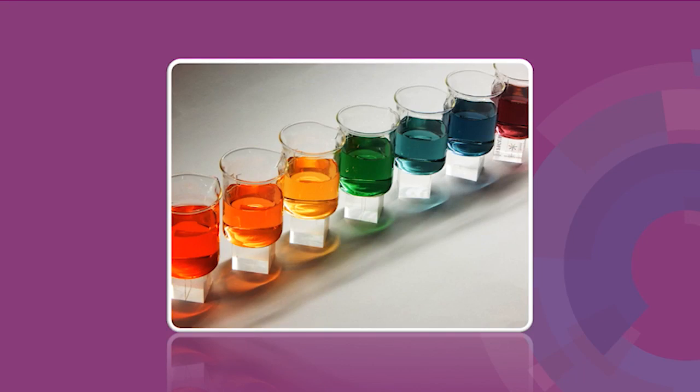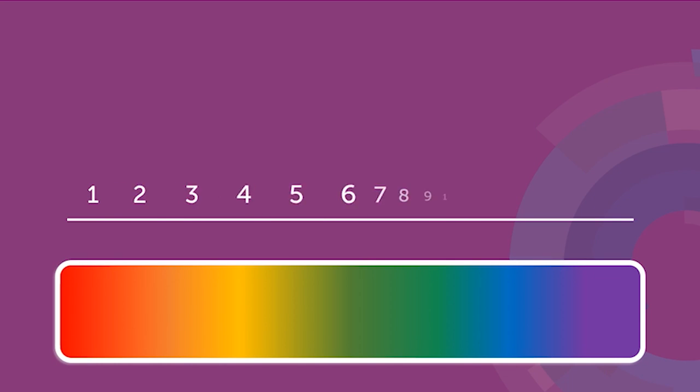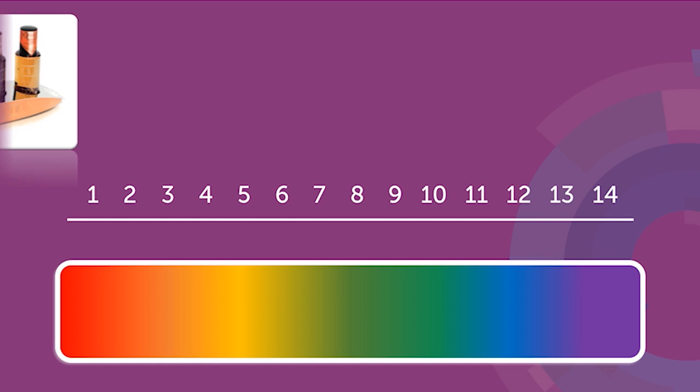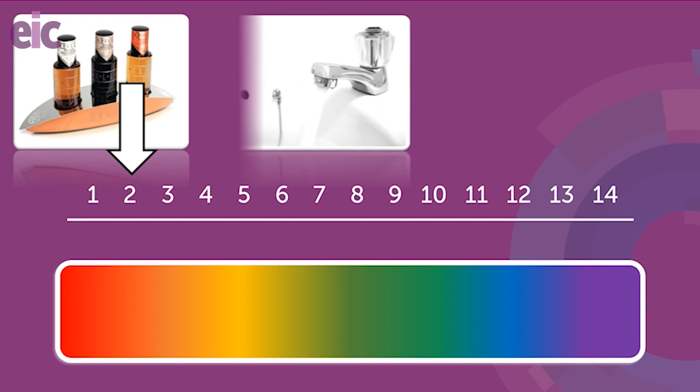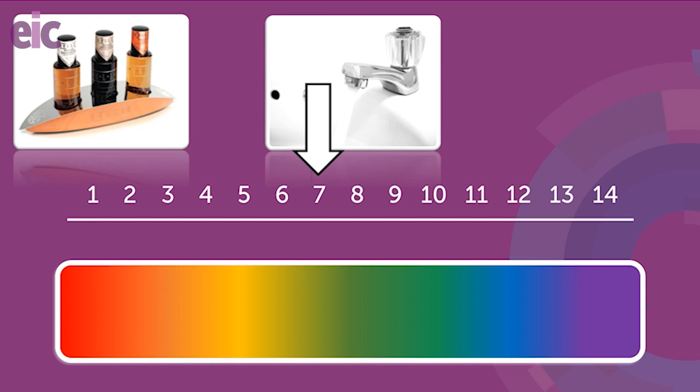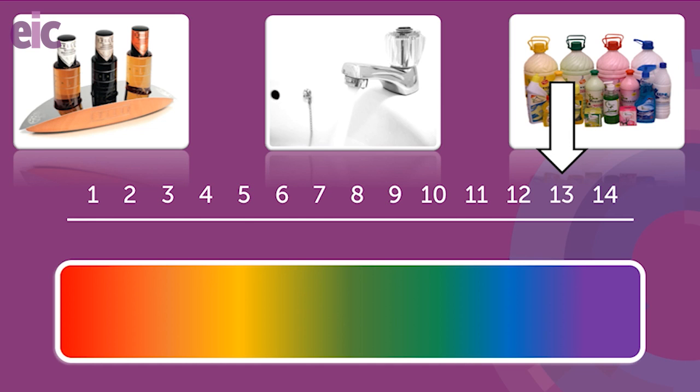pH is a measure of how acidic or alkaline a solution is. Universal indicator solution can reveal this for us with different colours according to the pH. Acids below pH 3, like household vinegar, turn it red. Water being neutral is green, and oven cleaner turns the indicator purple, revealing a pH above 11, great for removing fatty deposits.